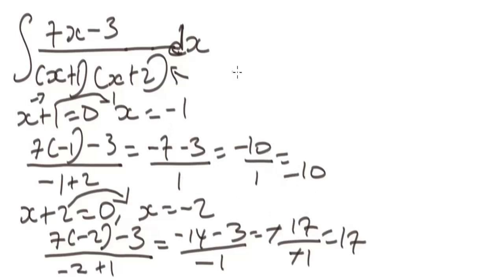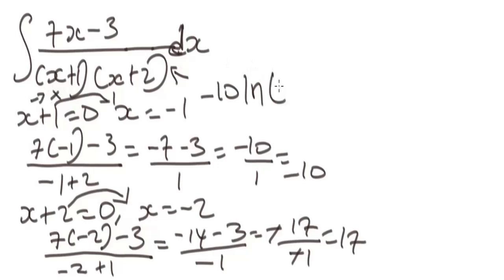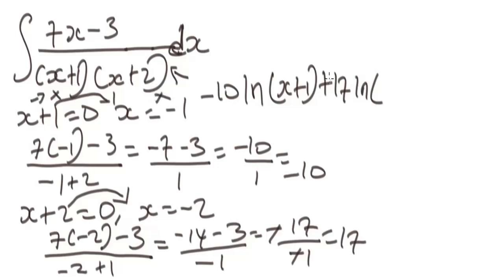Now that we have these two values, we can write the answer. Where we didn't substitute -1, we have (x + 1), and where we didn't substitute -2, we have (x + 2). So the answer is: -10 ln|x + 1| + 17 ln|x + 2| + C.